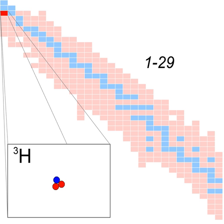One mole of deuterium-tritium gas would contain about 3.0 g of tritium and 2.0 g of deuterium. In comparison, the 20 moles of plutonium in a nuclear bomb consists of about 4.5 kg of plutonium-239.